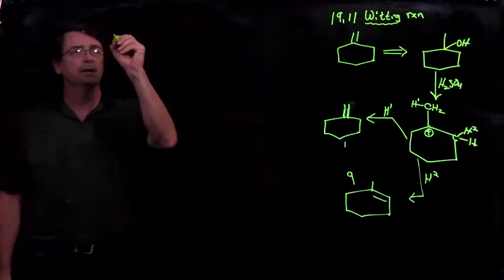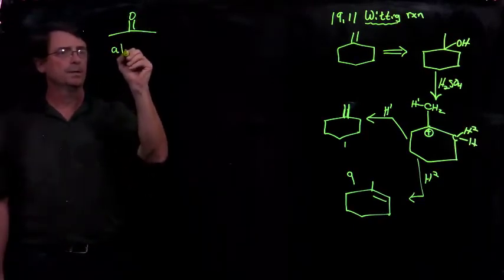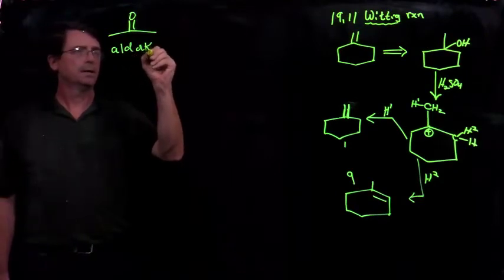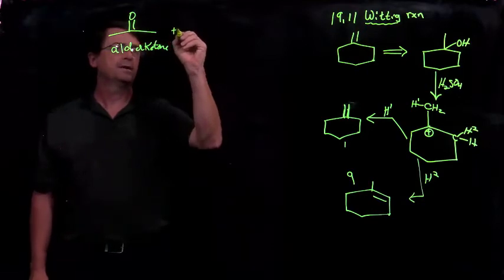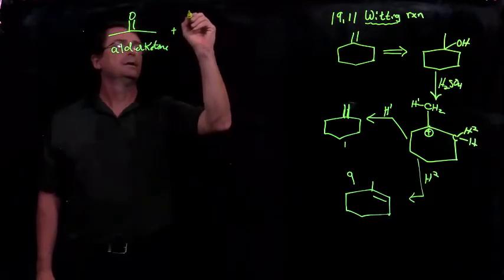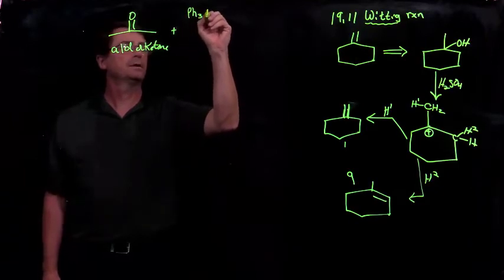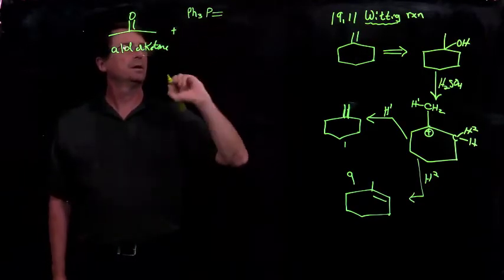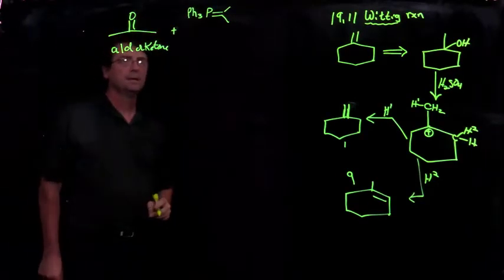So what is the Wittig reaction? The Wittig reaction is the reaction of a carbonyl compound. This can be an aldehyde or a ketone with a Wittig reagent. And for our class, these are going to be triphenyl phosphines with a double bond between the phosphorus and the carbon.